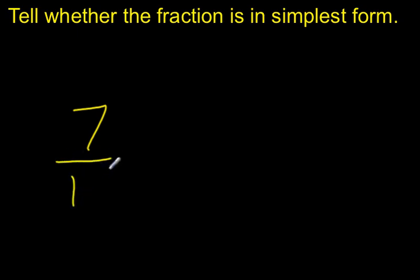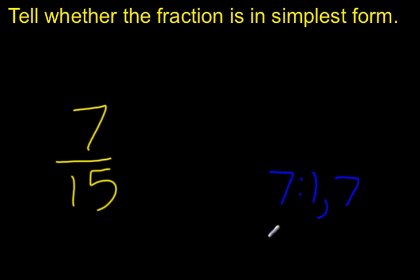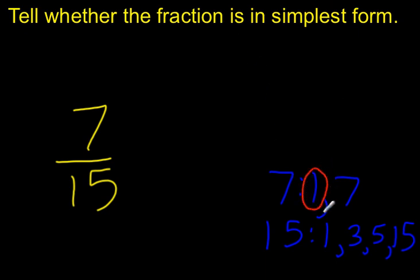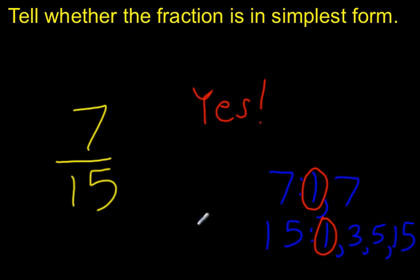Let's try 7 fifteenths. Let's see if it's in simplest form by checking the factors. Factors of 7: 1 and 7. Factors of 15: 1, 15, 3, and 5. The common factors — they have 1 in common. Anything else? 3, 5, 15, 7 — nothing else in common. So yes, 7 fifteenths is in simplest form because the only common factor is 1.